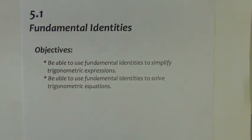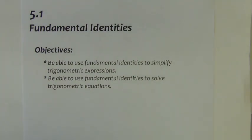Chapter 5 begins with what we call the fundamental identities. In the first half of this section, we will introduce you to the five sets of basic fundamental identities. In the rest of this section, we will begin to use those identities and show you how we can use them to do what we call proofs.